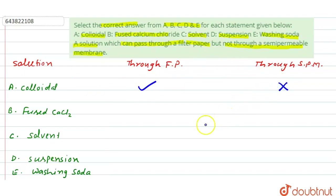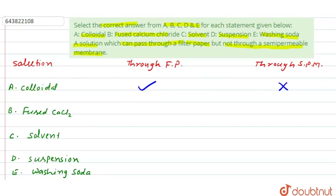Colloidal particles cannot pass through a semi-permeable membrane. Since the question asks for a solution that can pass through filter paper but not through a semi-permeable membrane, the answer is colloidal solution — option A.